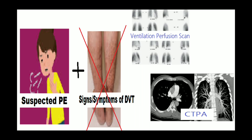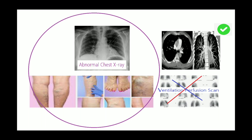In women with suspected pulmonary embolism without symptoms or signs of DVT, VQ scan and CTPA should be performed. When the chest X-ray is abnormal and there is clinical suspicion of PE, CTPA should be performed in preference to VQ scan.